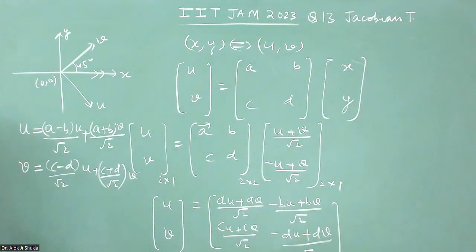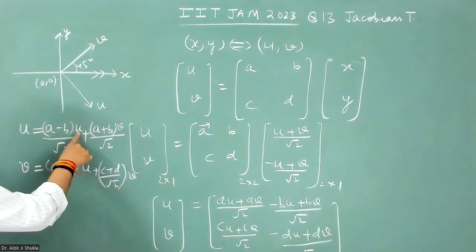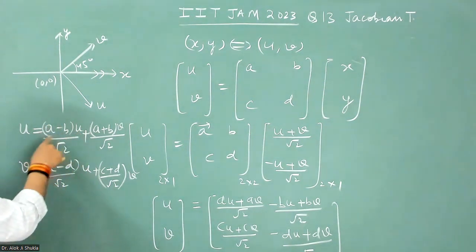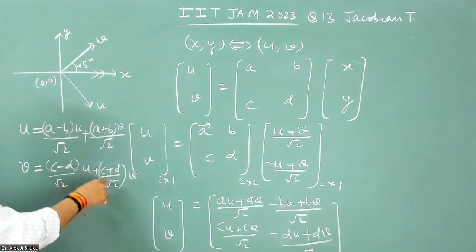And then you can just compare the values of the coefficients of U and V on both sides. Like here, this quantity is equal to one and this quantity is equal to zero. And here, this quantity is equal to zero and this quantity is equal to one.